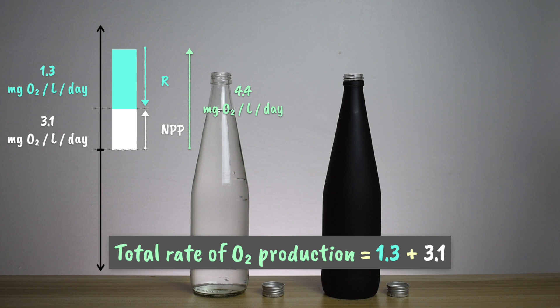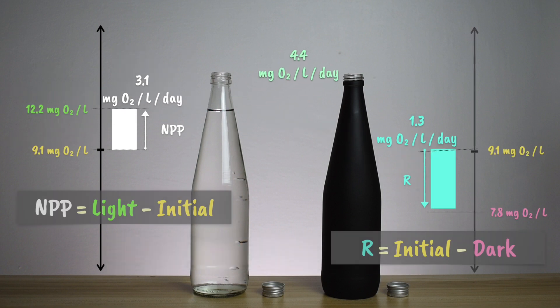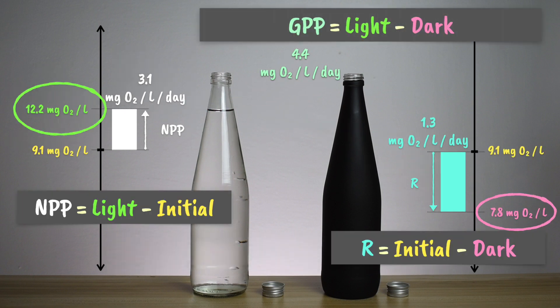This final value reflects our gross primary productivity, and the easiest way to calculate that is the light bottle value minus the dark bottle value.